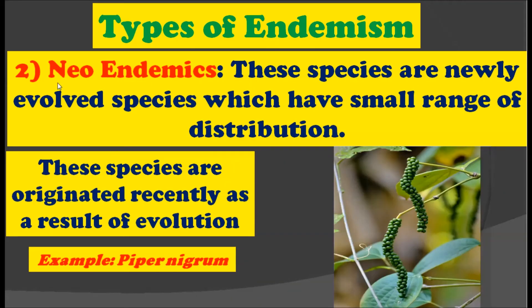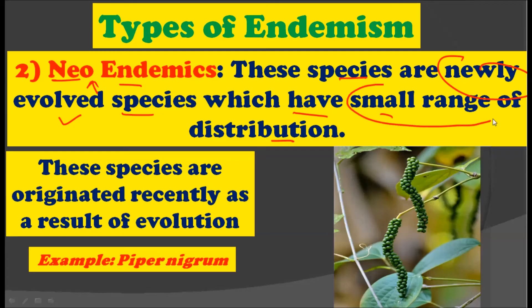The second type of endemics is neo-endemics. These species are newly evolved species which have a small range of distribution. The species belonging to neo-endemics are newly evolved in evolutionary time and therefore have a very small range of distribution. These species originated recently as a result of evolution, and the example for neo-endemics is Piper nigrum, which is recently evolved and distributed to a very small range.